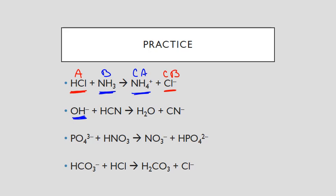OH⁻ is going to have the partner of H₂O. In order to go from OH⁻ to H₂O, it's going to gain a hydrogen, which means OH⁻ was a base, and that makes H₂O the conjugate acid. Now, looking at my other species, I have HCN, and its partner is CN⁻. In order to go from HCN to CN⁻, it had to donate a hydrogen — making it an acid, and making CN⁻ the conjugate base.